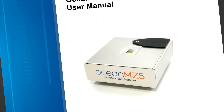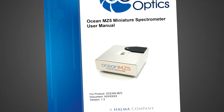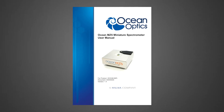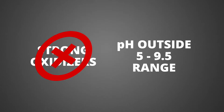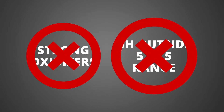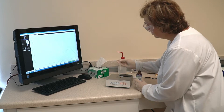Before making measurements with your MZ5, you'll want to check out the user's guide to confirm that your liquid samples are compatible with the zinc selenide crystal. For example, the MZ5 should not be used with strong oxidizers or acids and bases with a pH outside the 5 to 9.5 range. Make sure to review this information before applying any samples to the zinc selenide crystal surface.